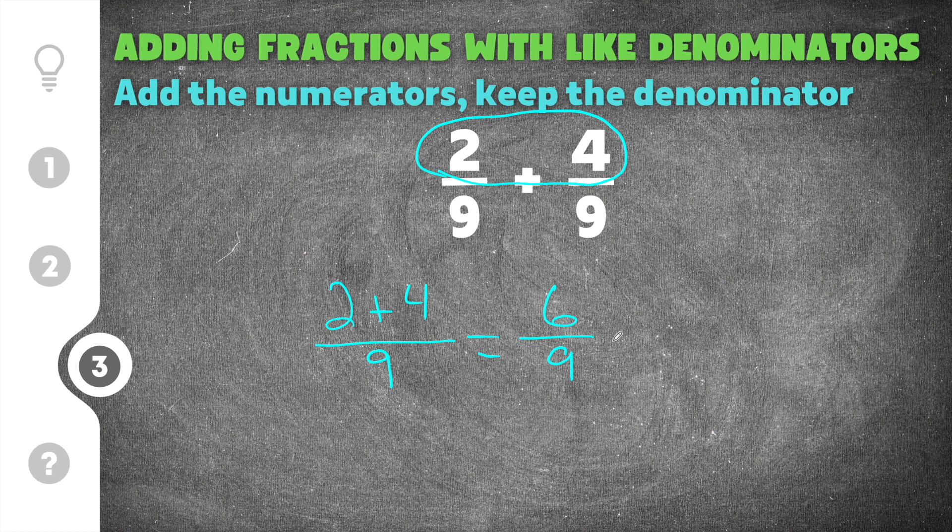Then you have to check to see if you can reduce it. So if we look six and nine, well two goes into six but it doesn't go into nine. Three goes into six and three also goes into nine. So six divided by three is two and then nine divided by three is three. So I know I can reduce this by three because three goes into both six and nine. Then finally our solution is going to be two thirds after we reduce it by three.